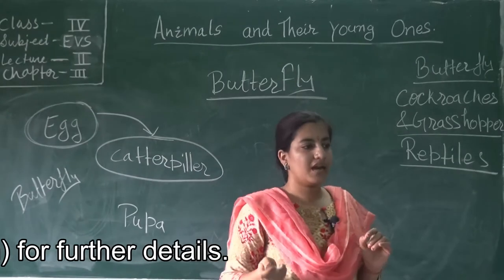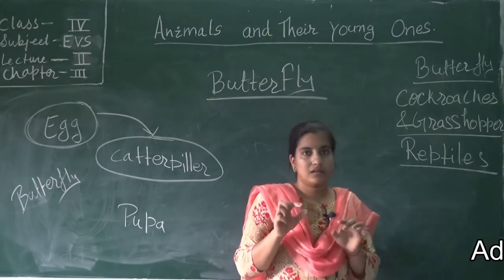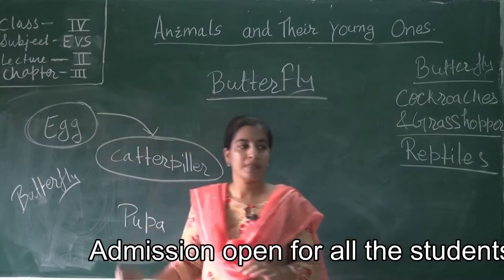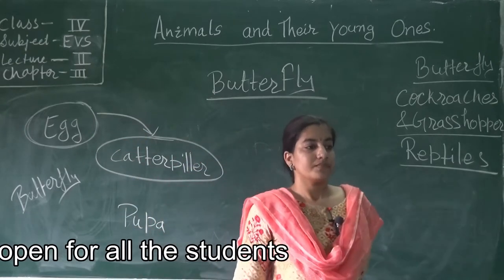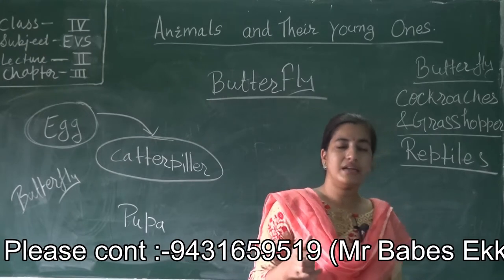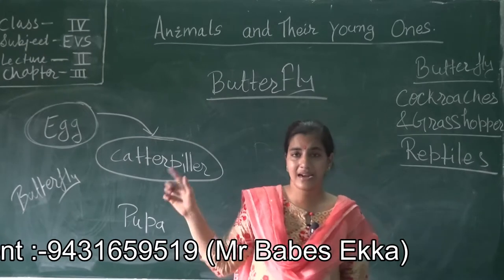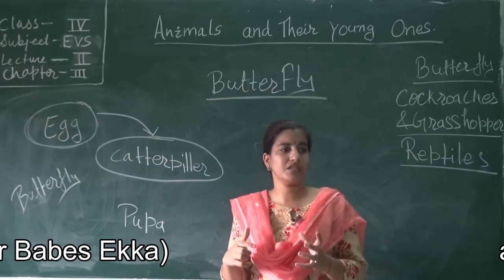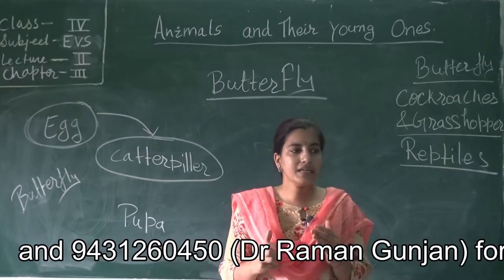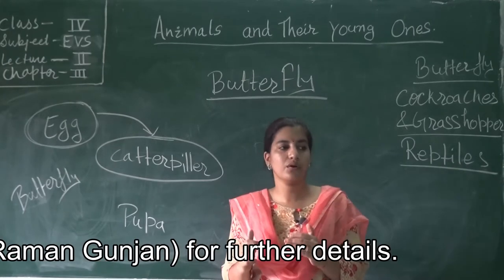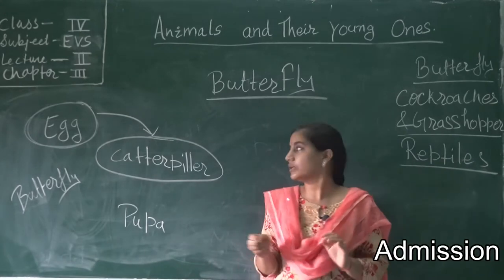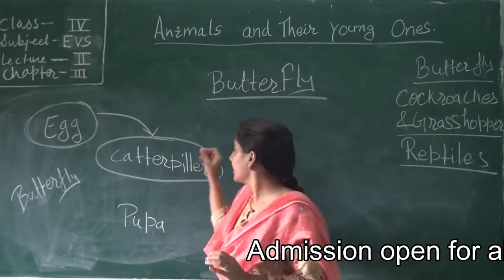The egg develops into a caterpillar. This caterpillar, or the larva which comes out from that particular egg, eats plenty of leaves for growth and development. A protective covering is also formed there.